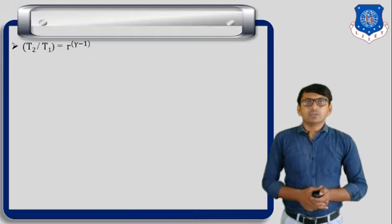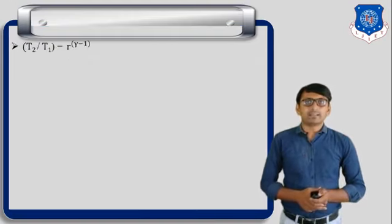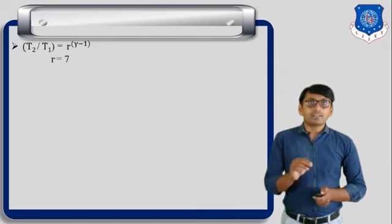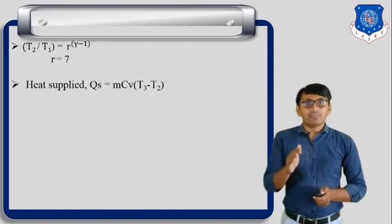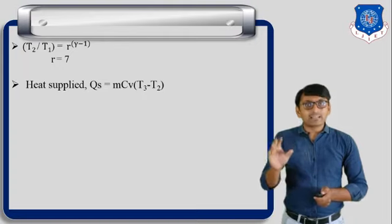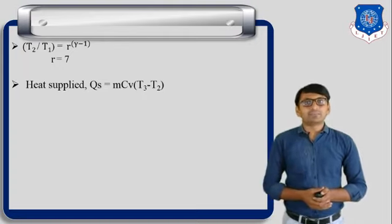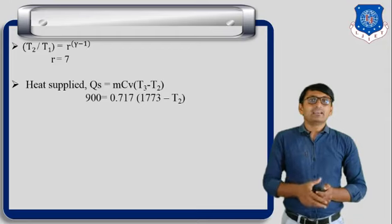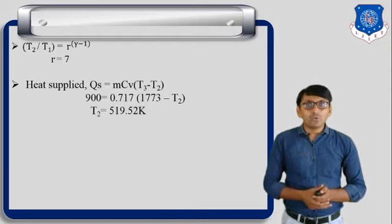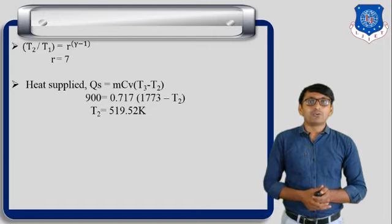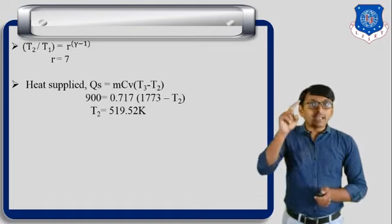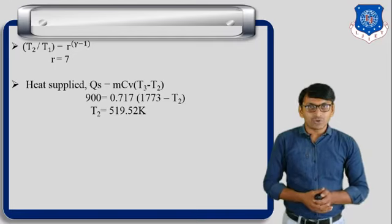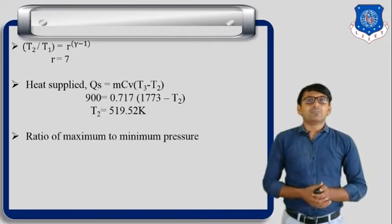First step: T2 by T1 equals R raised to gamma minus 1. But here we do not know the value of T2, so first we find T2 using the second step. Qs equals m·Cv·(T3 minus T2). Putting in the value of m as 1 kg, Cv, and T3, we find T2 equals 519.52 Kelvin. Putting this value of T2 back into the first step, we get the compression ratio R equal to 7.